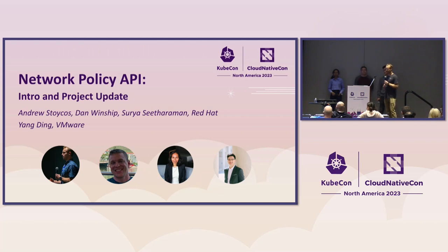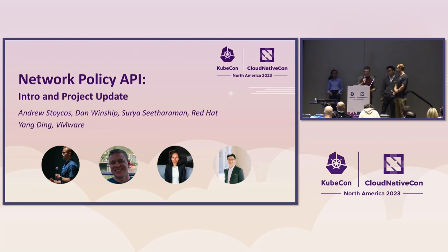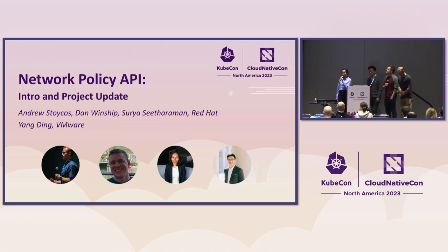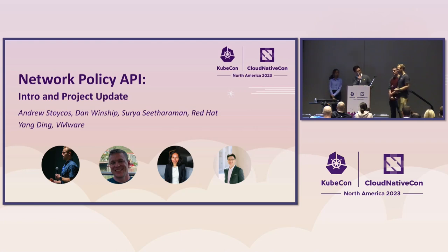My name is Andrew Stoikis. I am one of the maintainers for the Network Policy API repo and I work at Red Hat as a senior software engineer. My name is Dan Winship. I also work at Red Hat on various OpenShift networking stuff. I'm Surya and I'm also an engineer working at Red Hat. I contribute a lot to the SIG Network Policy API working group. My name is Yang and I work at VMware on container networking and security, and I'm also part of the same working group.